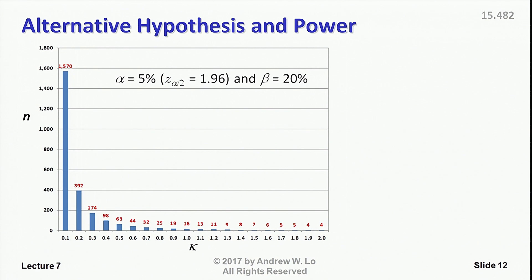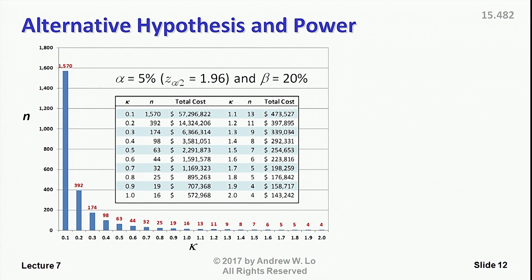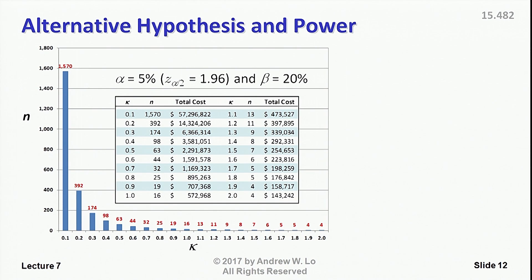The smaller the number of patients you need in order to get yourself a power of 80% or a type 2 error of 20%. So that's what I'm fixing in all of this. And these numbers actually translate into dollars and cents. If you multiply a cost of $36,000 per patient for a clinical trial, that's the average figure that we saw last time, and you multiply that by the number of observations, the number of patients you need, you can see that the stronger your treatment effect, the fewer patients you need, the less money you're spending.